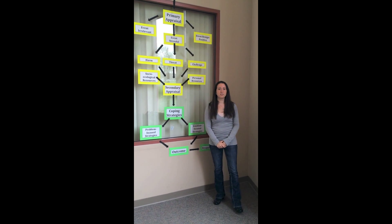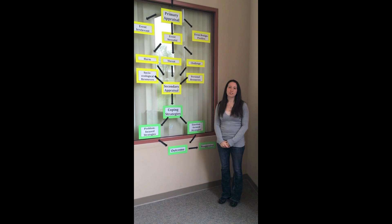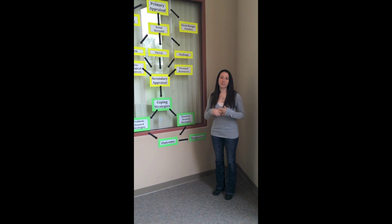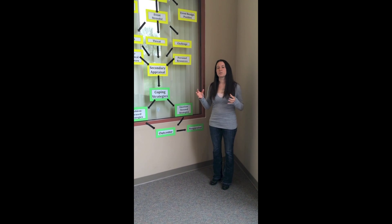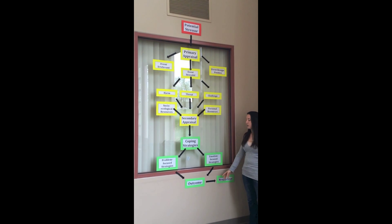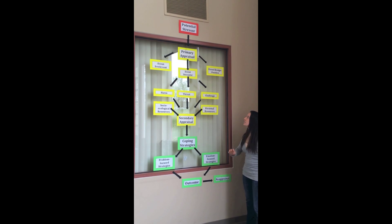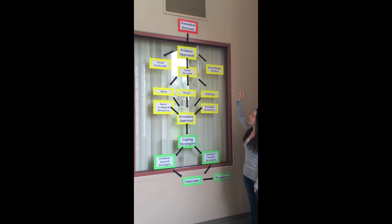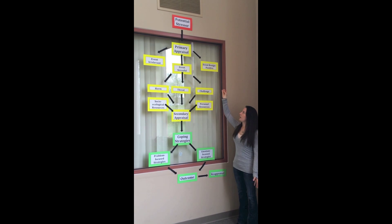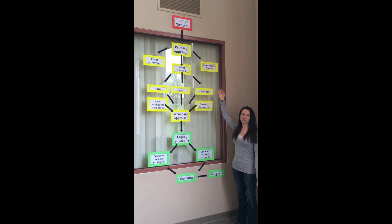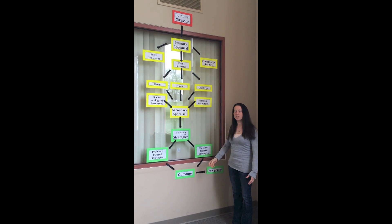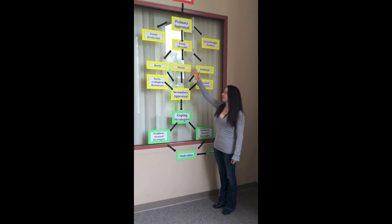We are now going to go over three scenarios using the Lazarus and Folkman model of stress and coping. First, we're going to talk about Jim. Jim has a final exam next week in nursing theories. He's very stressed about it — he's losing sleep and can't even focus when he's studying. He's going to go through these steps to help him reach the outcome, which is hopefully feeling good about the test. In primary appraisal, he does not see this test as irrelevant or benign positive — he sees it as a stressful situation.